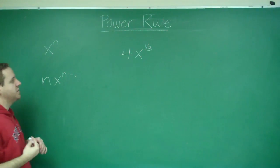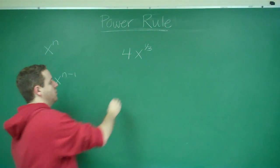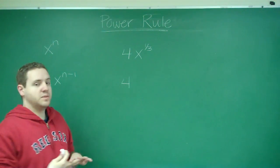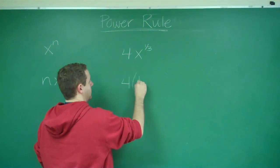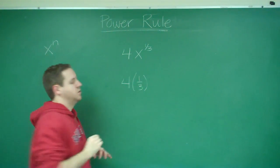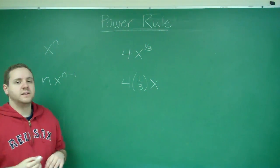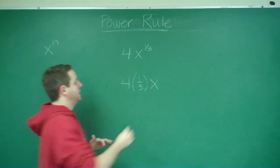Now to take the derivative, remember that if we have a constant, the constant always stays there. You're going to bring the power down. You're going to still have x, and your new power is going to be 1 third minus 1.